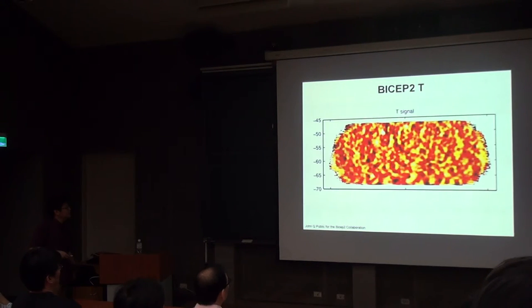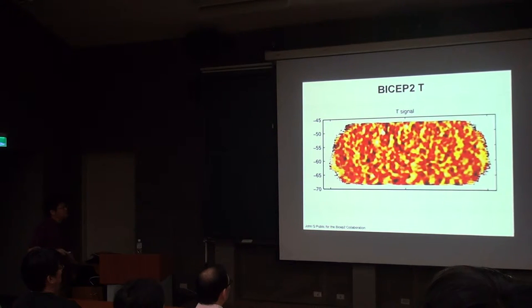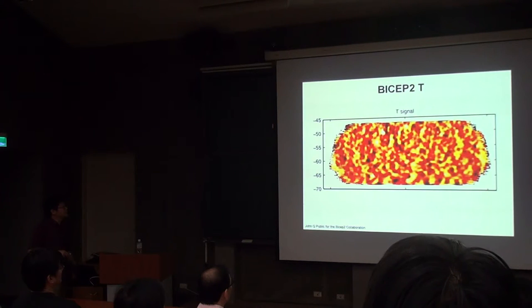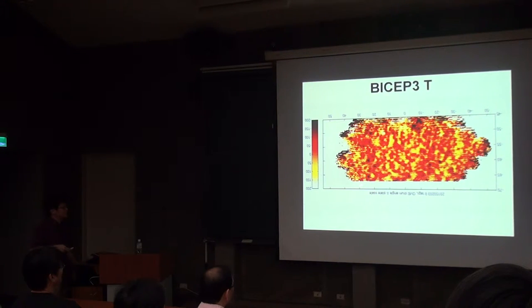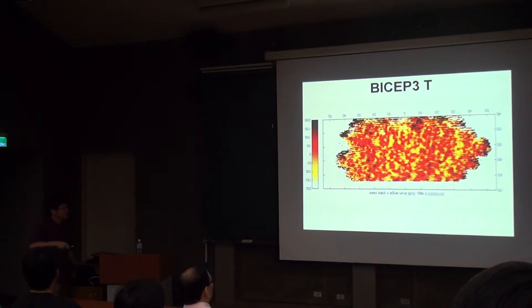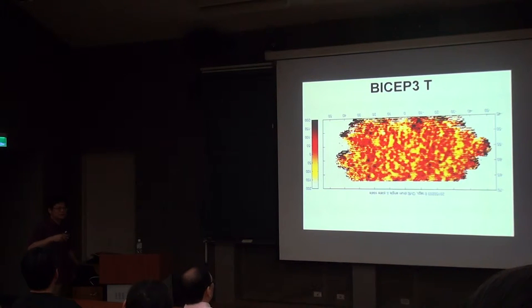This is the BICEP2 temperature signal — temperature fluctuation map produced with three years of BICEP2 observation. This is the BICEP3 temperature map produced in just six hours, at a different frequency. Temperature fluctuation maps like this were a Nobel Prize-winning measurement 20 years ago; now we do it in minutes.